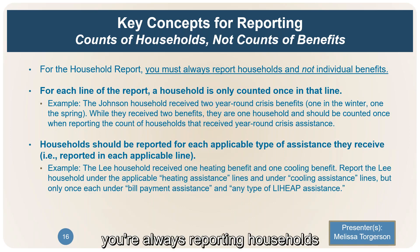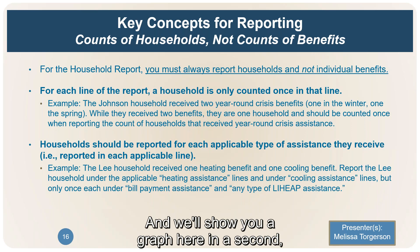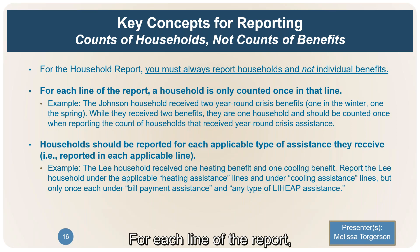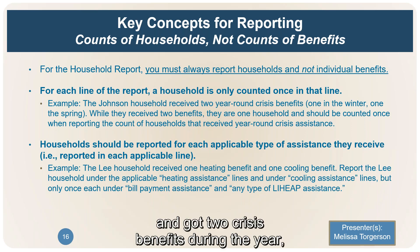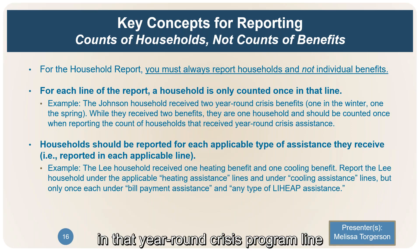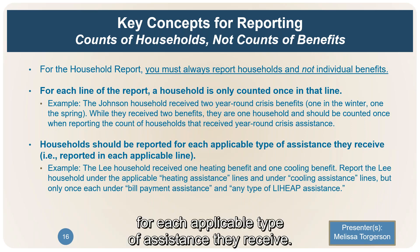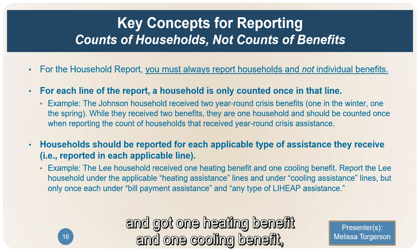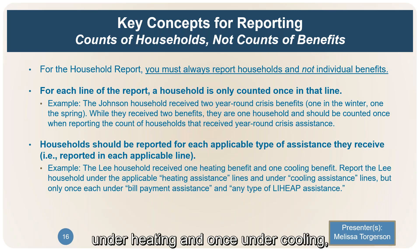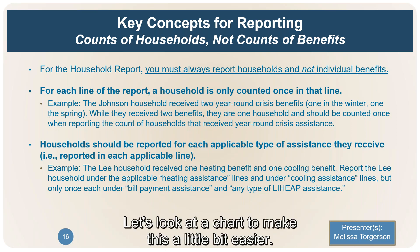For the household report, you're always reporting households and not individual benefits — this is what we mean by unduplicated counts. For each line of the report, a household is only counted once. For example, if the Johnson household got two crisis benefits during the year, they're still only counted once in the crisis line. Households should be reported for each applicable type of assistance received. So if the Lee household got one heating benefit and one cooling benefit, they're counted once under heating and once under cooling, but only once under bill payment and any type of assistance.